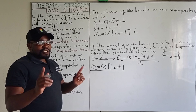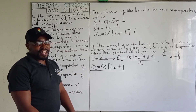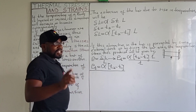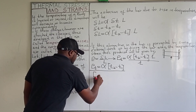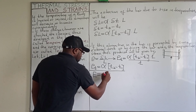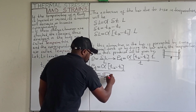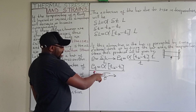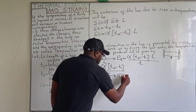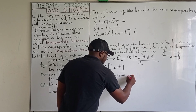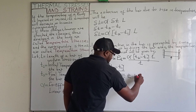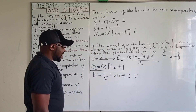The temperature stress developed, on the other hand — temperature stress — we are going to get it from this formula. Young's modulus of elasticity is given by the ratio of stress to that of strain. When you make stress the subject of this formula, you are going to have stress equal to the strain multiplied by the Young's modulus of elasticity.